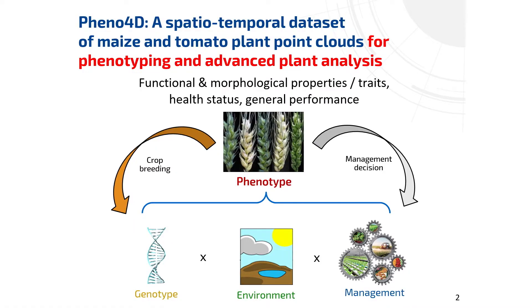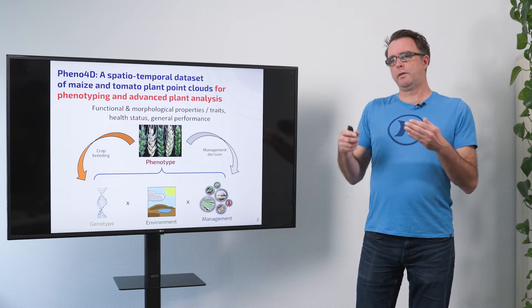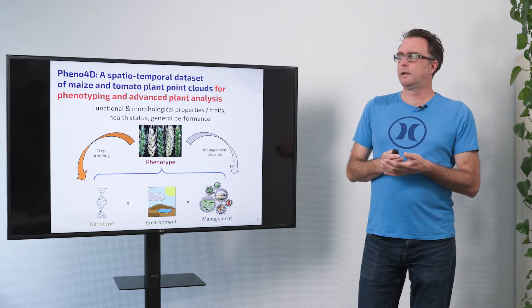When we know numbers about the phenotype, when we have quantitative information about that, then we can use this for breeding to decide for certain genotypes and we can use it for management, for example to decide when is the right point to do fertilization or things like that.